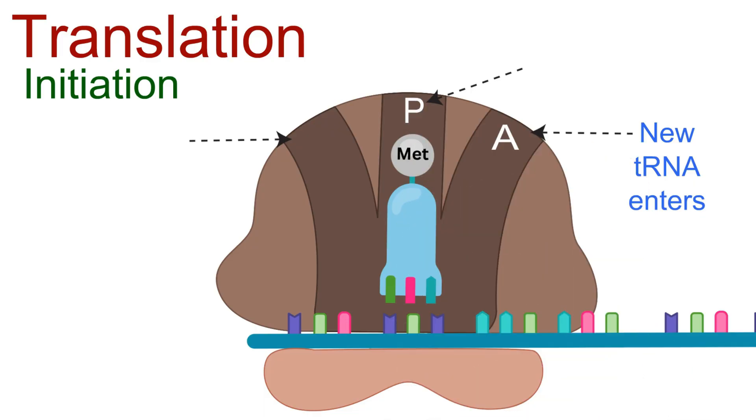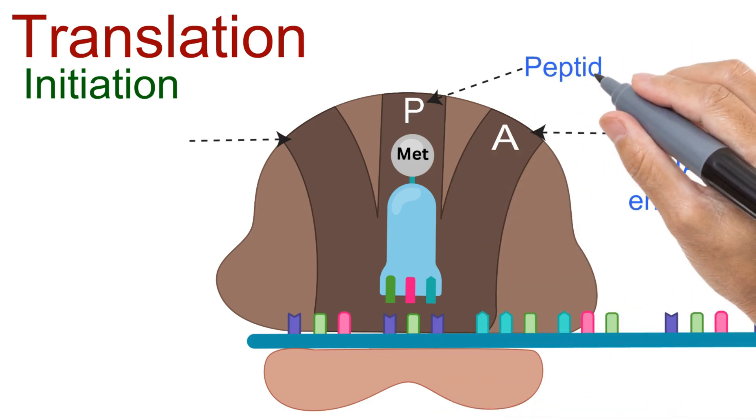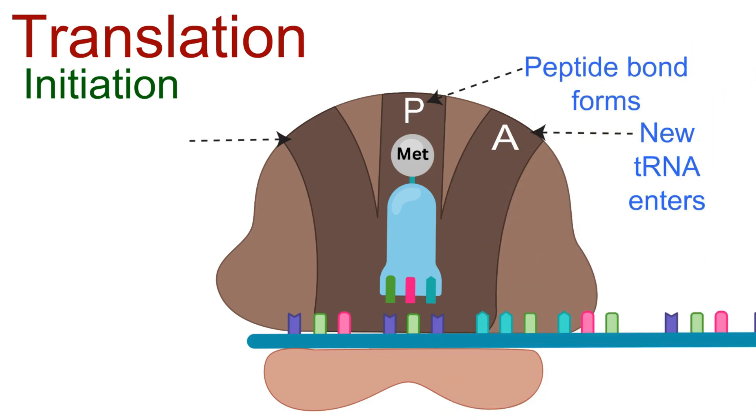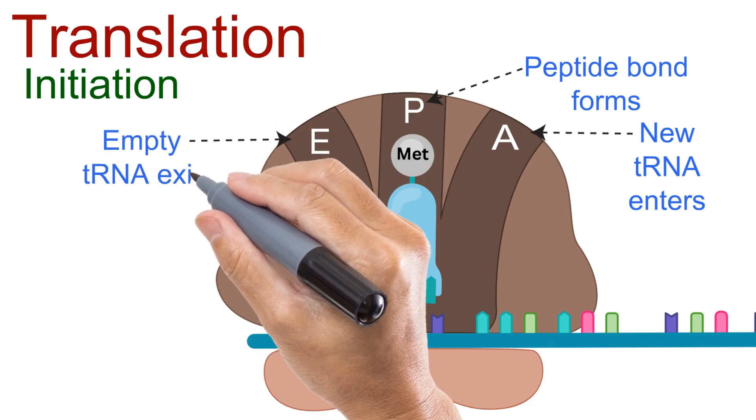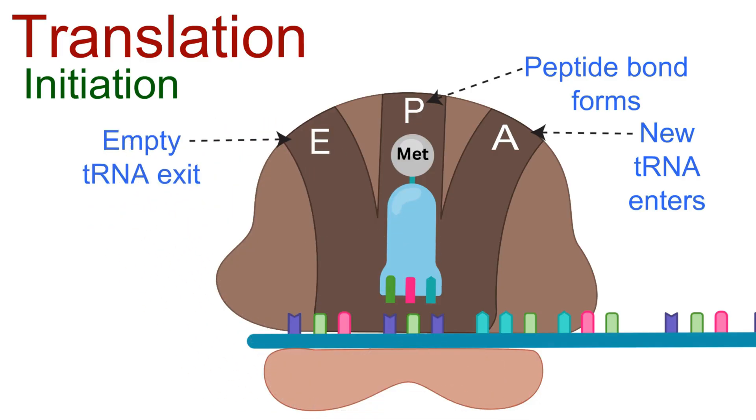Second, P site or peptidal site, the spot where the growing polypeptide chain is held and new bonds are formed. And third, E site or exit site, the exit door where empty transfer RNA molecules leave after delivering their amino acid.